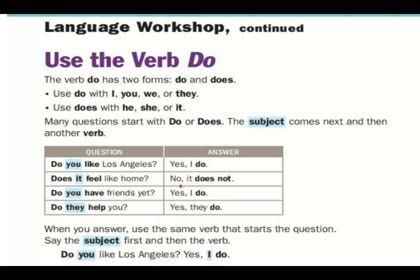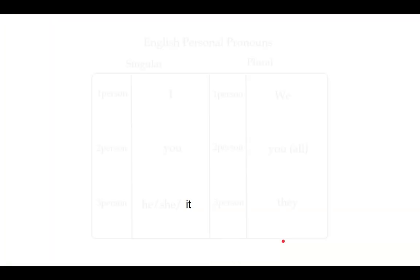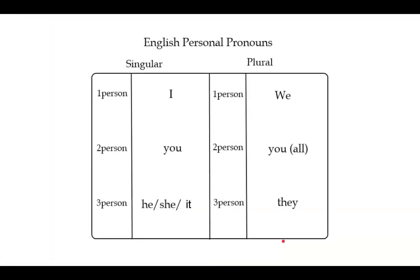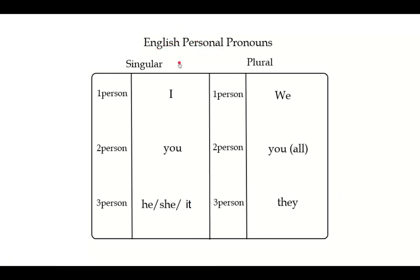When you answer, use the same verb that starts the question. 'Do you?' — 'Yes, I do.' 'Does it?' — 'No, it doesn't.' Say the subject first and then the verb.